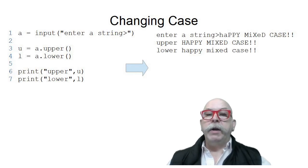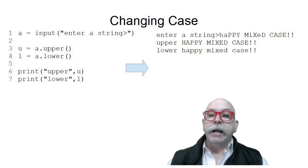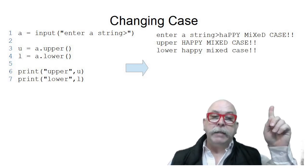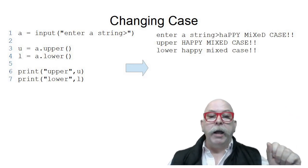In this program, we can see that I'm asked to enter a string, and the value is saved in the variable a. The variable u is assigned to a.upper, or the uppercase string. The variable l is assigned to a.lower, the lowercase string, and then I print the uppercase string and the lowercase string. You can see the results that I typed in happy mixed case, and it's displayed in all upper and it's displayed in all lower.